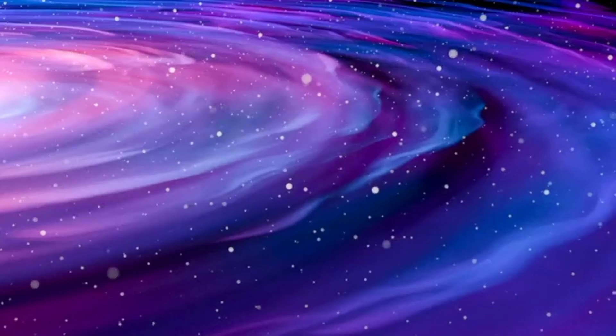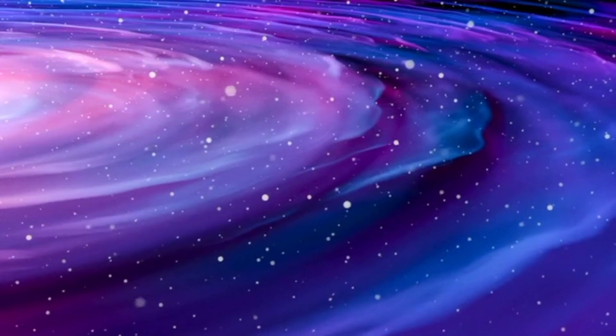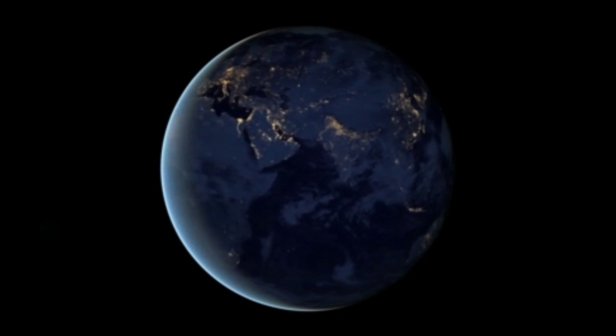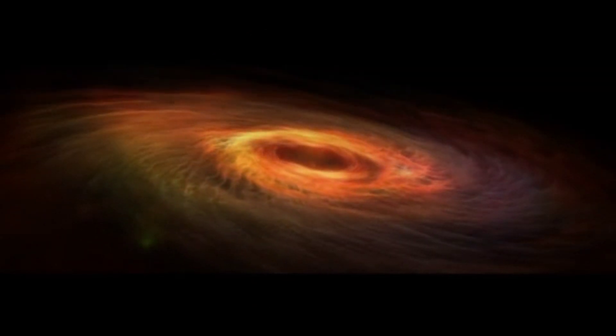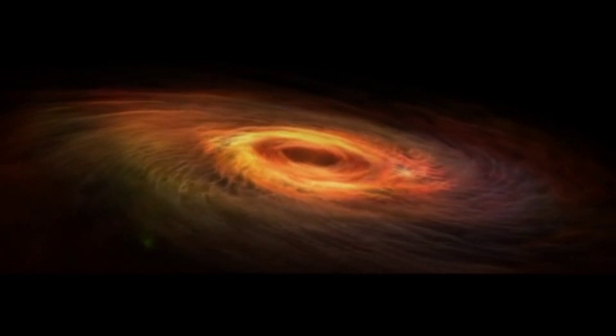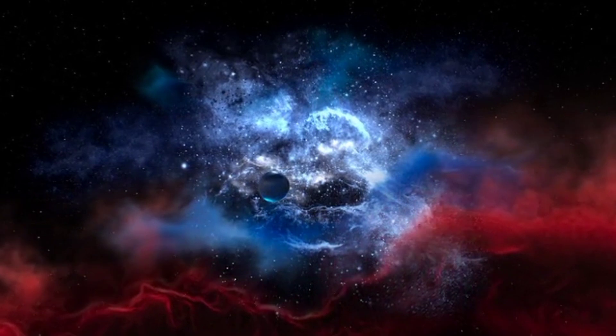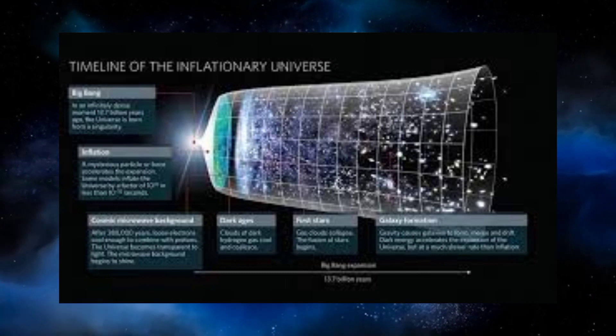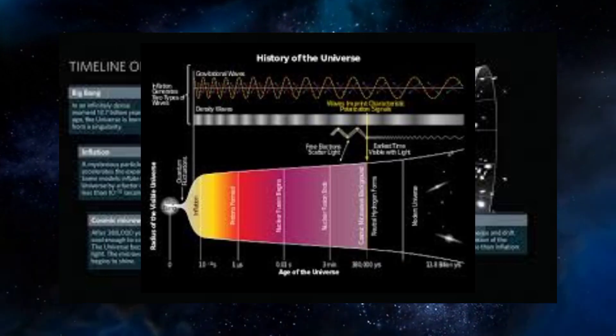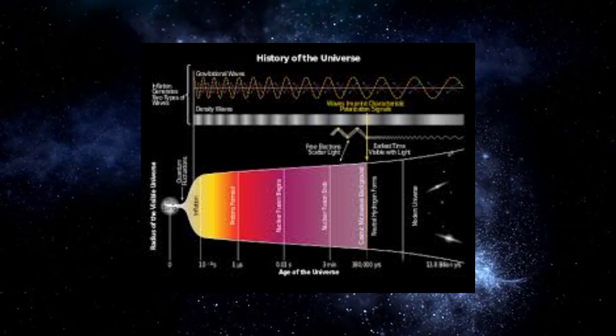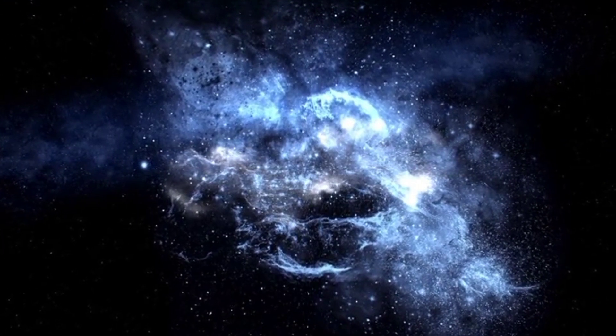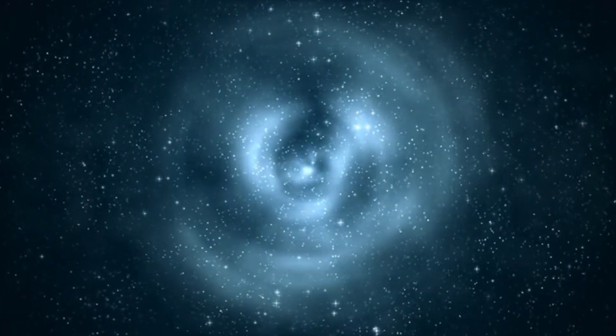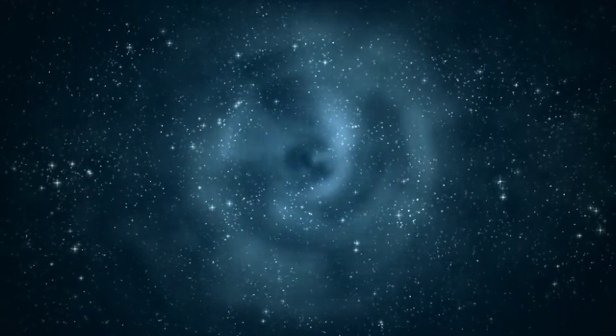The concept of cosmic inflation provides another fascinating perspective on the universe's perfection. According to this theory, the universe underwent an exponential expansion in its earliest moments, smoothing out irregularities and creating the large-scale uniformity we observe today. The inflationary universe model is described by complex equations involving scalar fields and potential energy. These equations explain how tiny quantum fluctuations in the early universe gave rise to the cosmic microwave background radiation and the formation of galaxies and galaxy clusters, making the universe appear remarkably homogeneous.